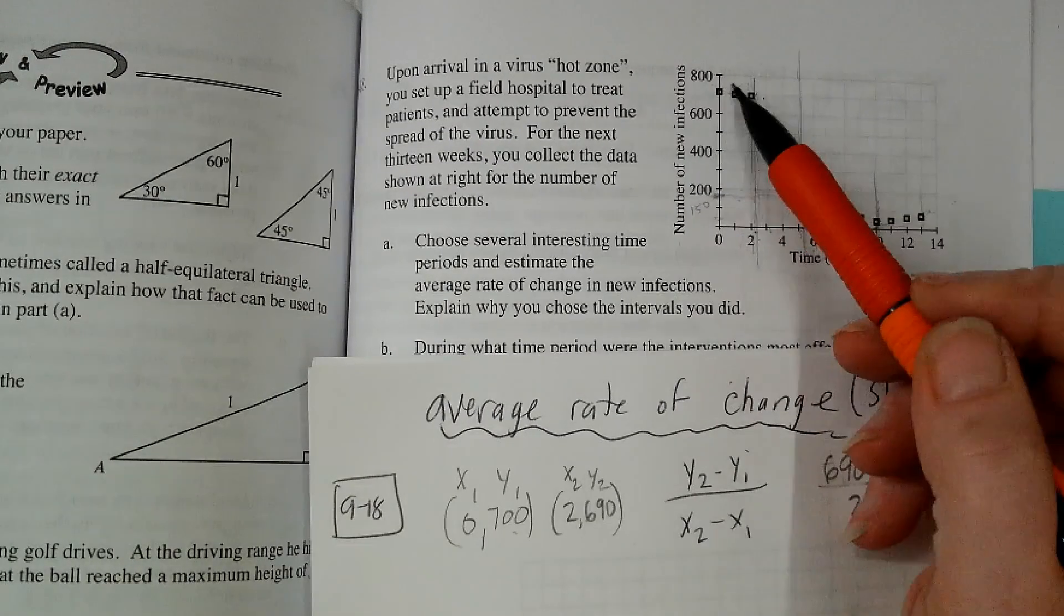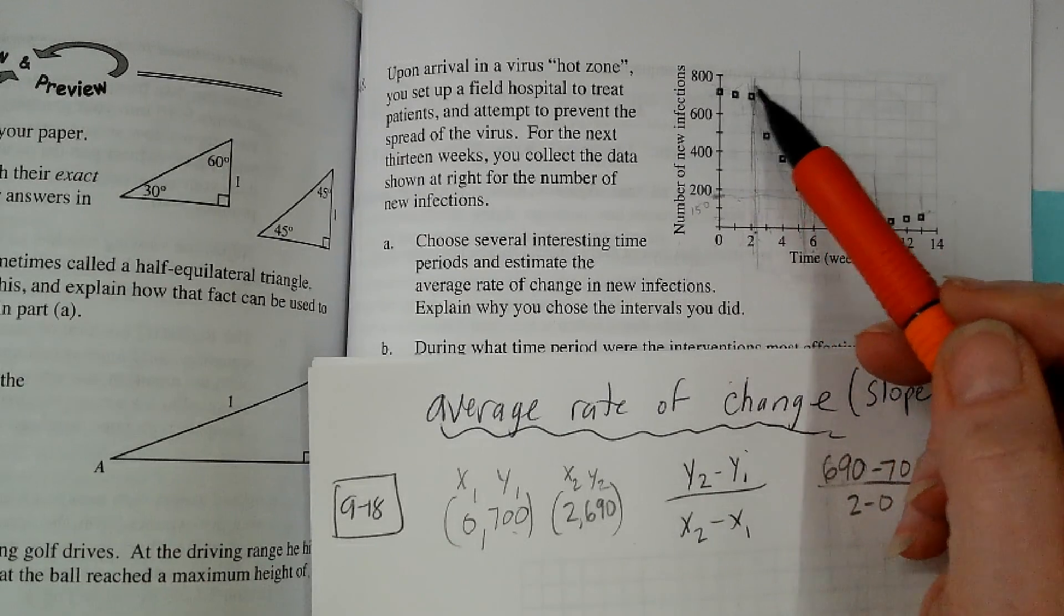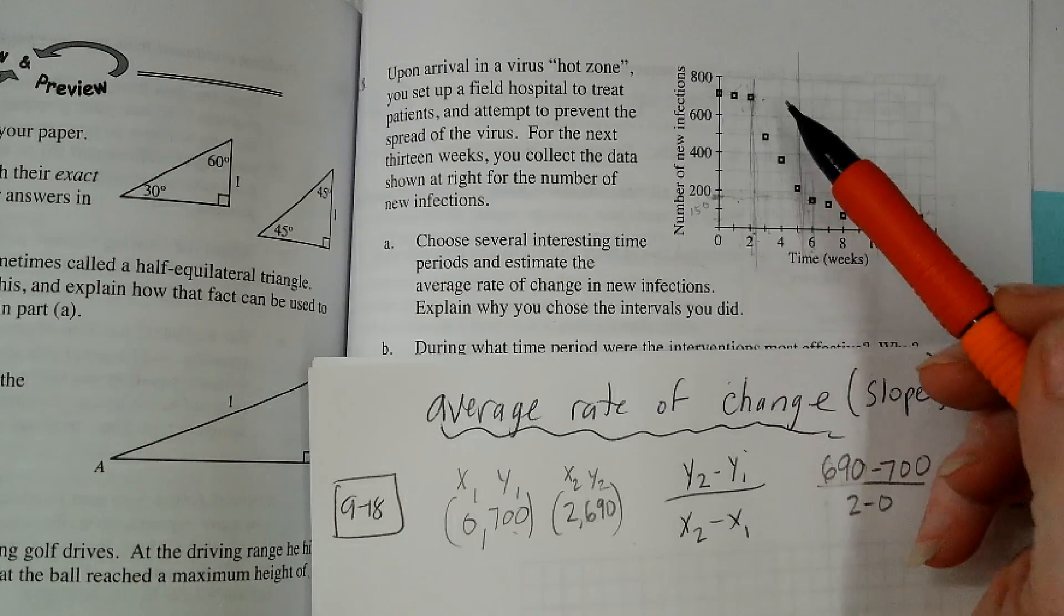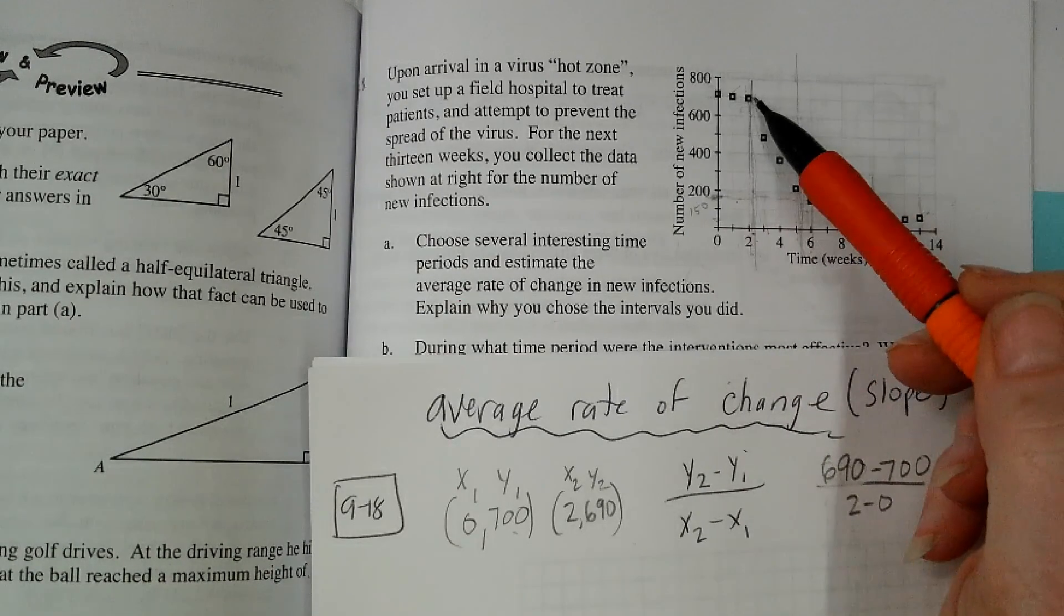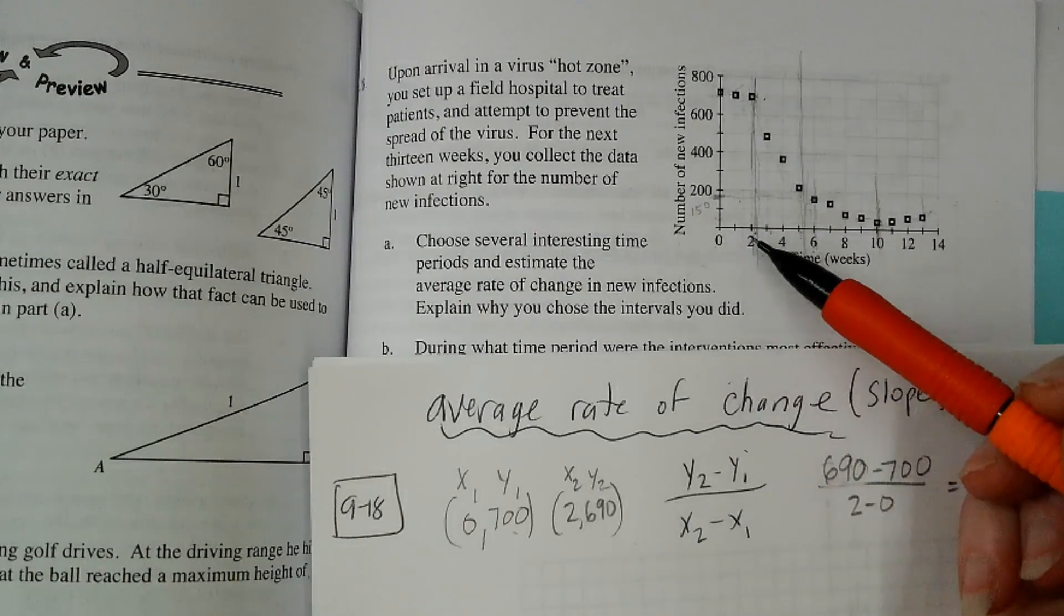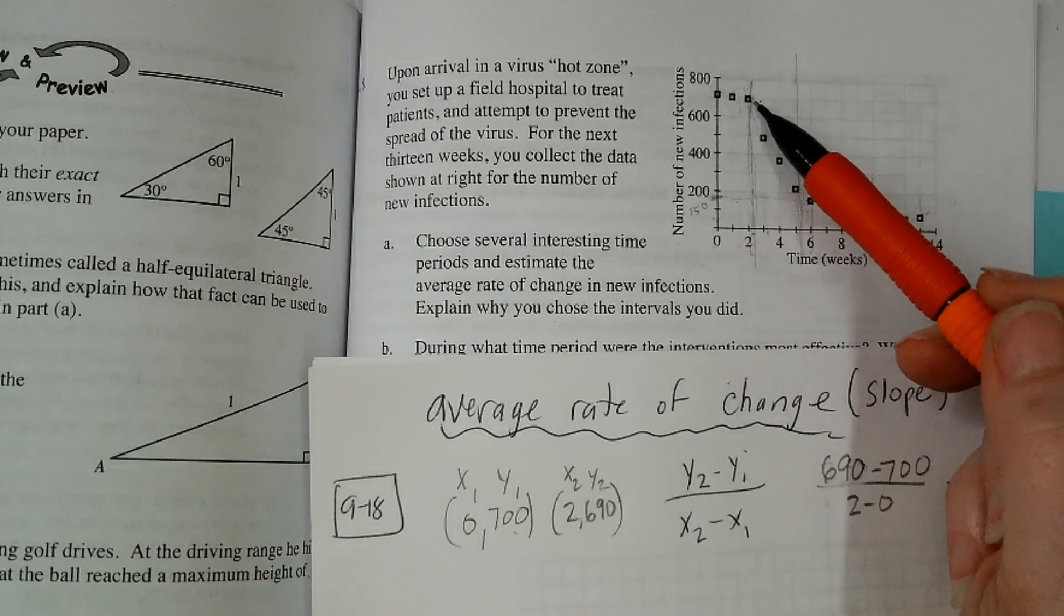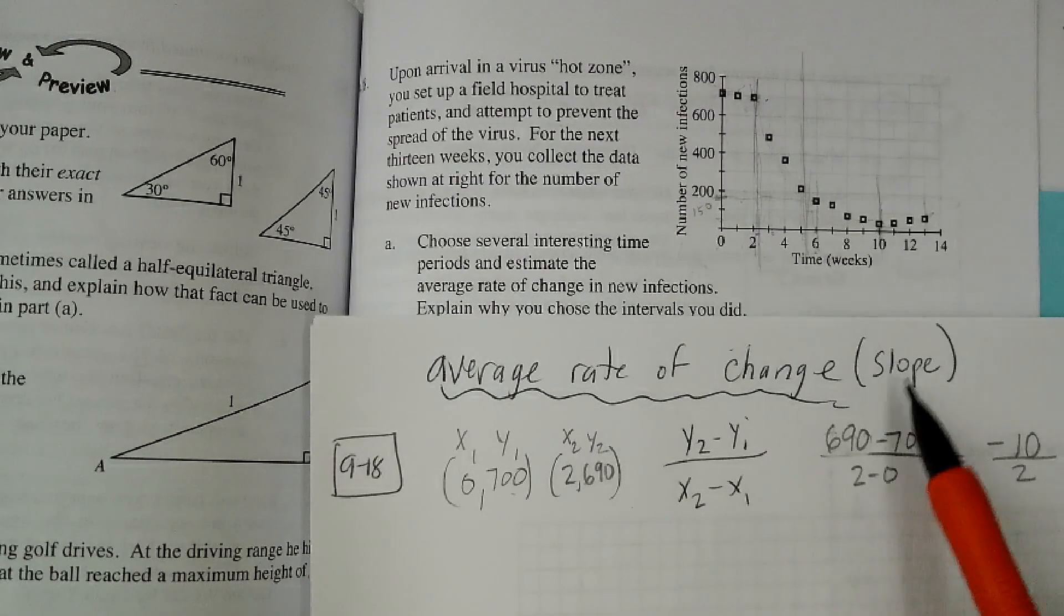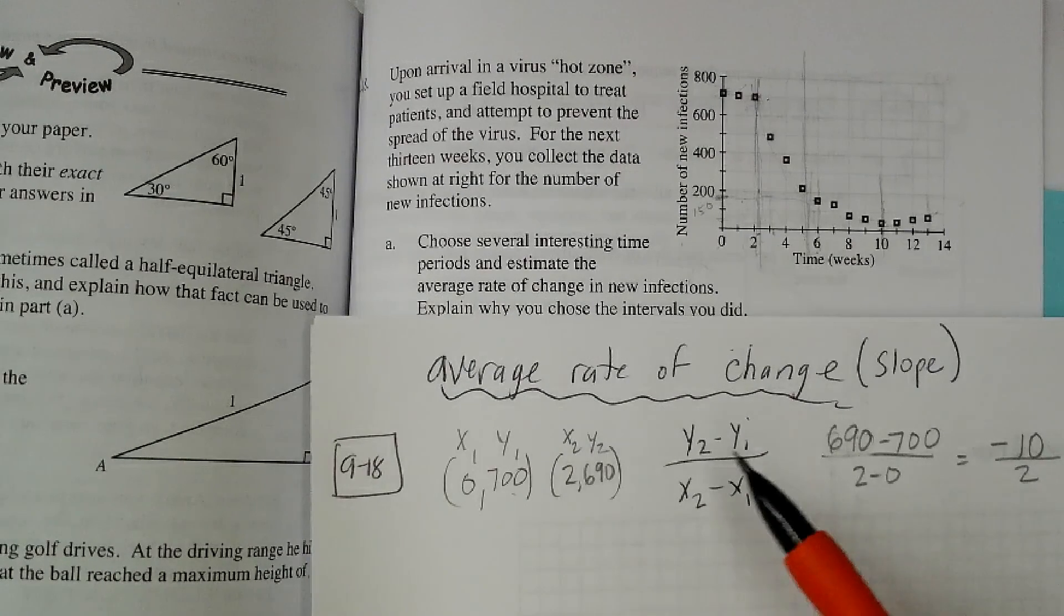I thought this interval right here was interesting because it just looked flat for the first two weeks. So I chose that interval first. This is from week 0 to week 2 where I see this flatness. That seems interesting because it's flat. And I know average rate of change is the same as the slope.